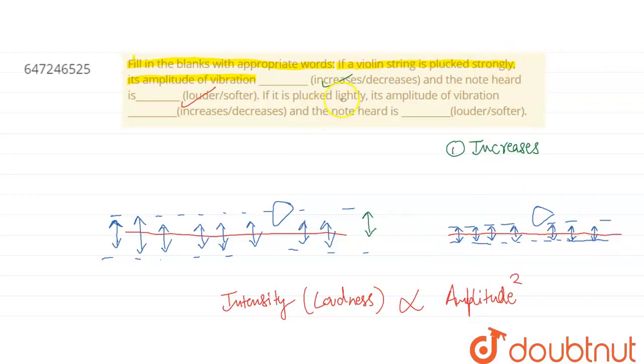So if the vibration, if it's plugged lightly, its amplitude decreases. And the note heard, as I showed, if amplitude is less, loudness will also be less. So if that note is less loud, it means it is soft, right?